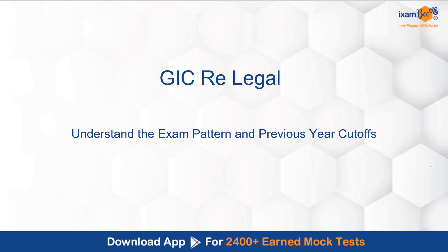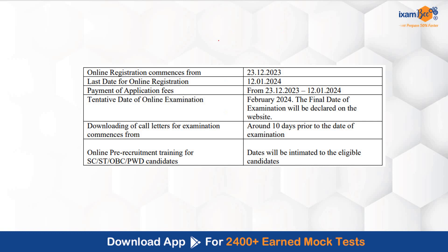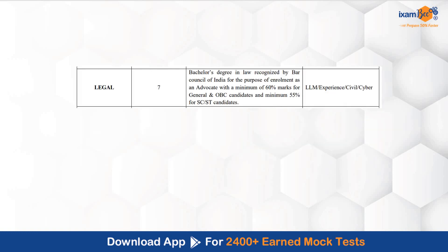Let's look at the important dates. Aap online form fill kar sakte ho till 12th of January; 23rd of December se registration start ho gayi thi and will last up to 12th of January. Exam dates abhi out nahi hoi hain. Tentative date of online exam is February 2024. In legal, there are seven vacancies.